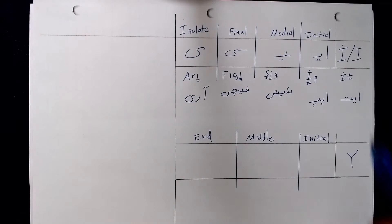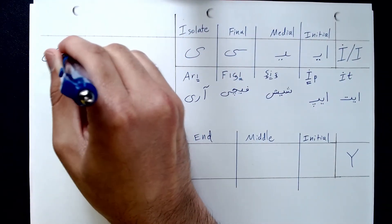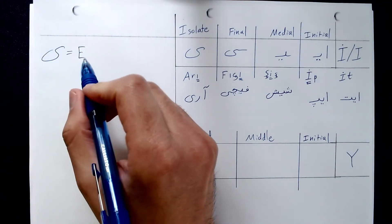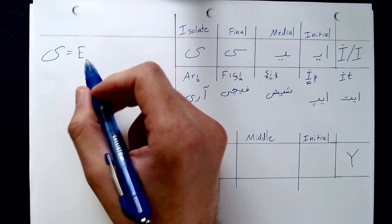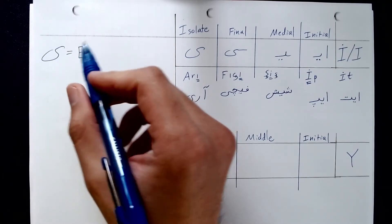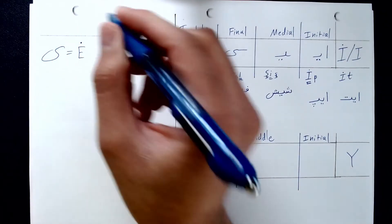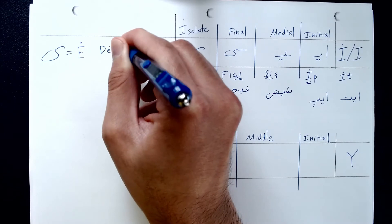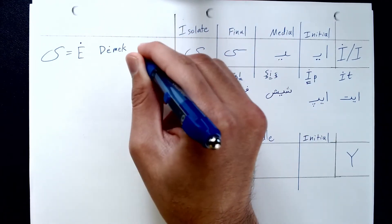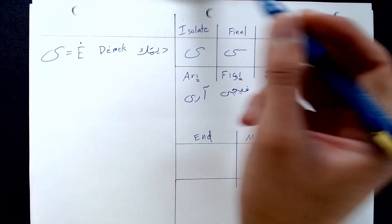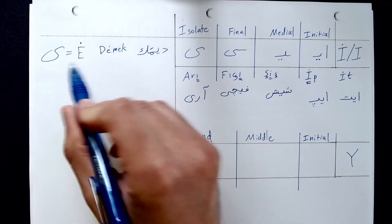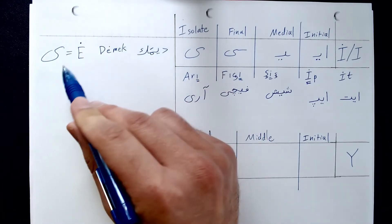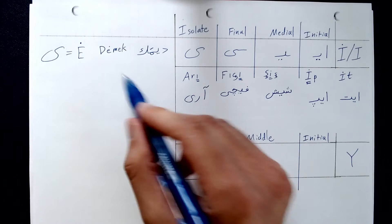There's one slight detour: sometimes the letter Y can be used to represent the E sound. This is very rare — you can probably count on one or two hands the number of words that have this. To differentiate it from the normal E, we put a dot on top. It appears in words like Demek, for example. In Demek, the Y here is representing E, and then the second E is represented with the normal Östün.